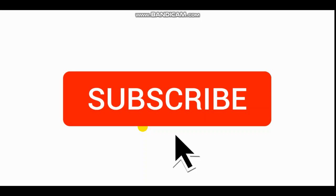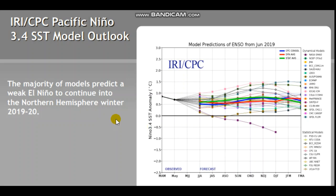First off, if you don't know what an El Niño or La Niña is — let me explain. I want to look at why I mention La Niña, because there is a possibility of one. One model is showing La Niña, though it's unlikely. At this point it seems more like a weak El Niño or possibly neutral.